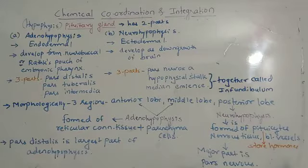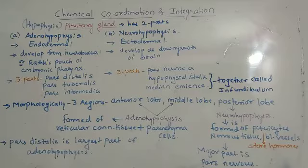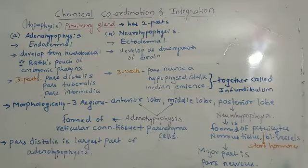The actual location where the pituitary gland lies is in the bony cavity called the sella turcica, or the hypophysial fossa of the sphenoid bone.